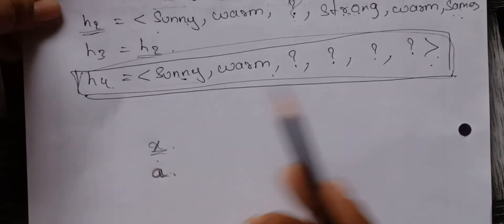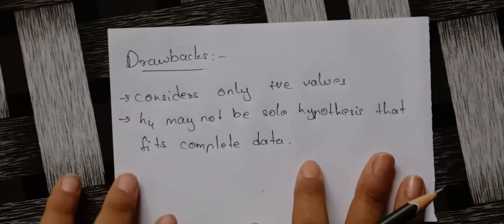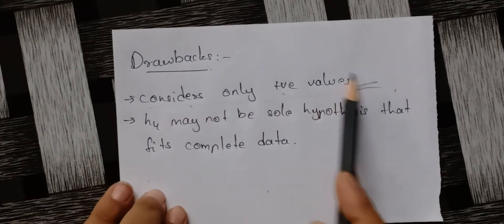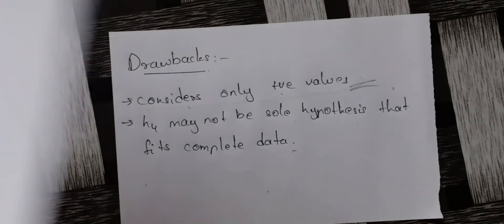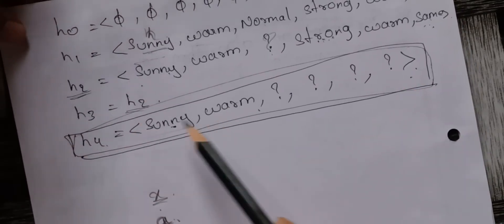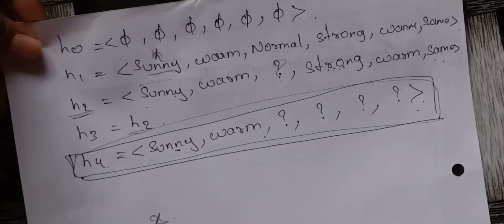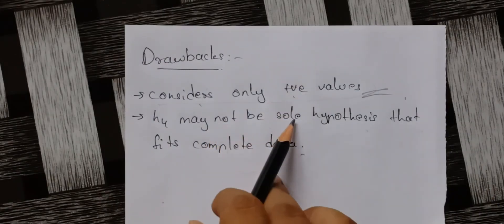Output the final hypothesis H. This is the Find-S algorithm. There are some drawbacks: it considers only positive values — negative examples are not considered. Also, H4 may not be the sole hypothesis that fits the complete data, meaning there could be a better answer.